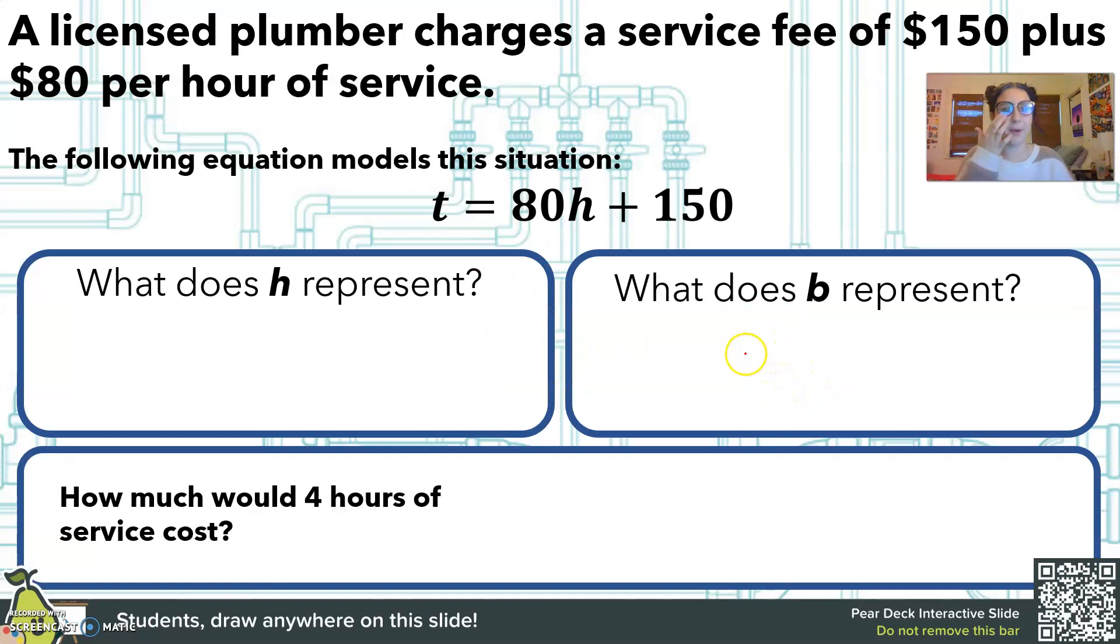Let's try another problem. A licensed plumber charges a service fee of $150 plus $80 per hour of service. So here's the equation for this situation. t, which is going to be our total cost. And h, which will be the number of hours. This should be t.